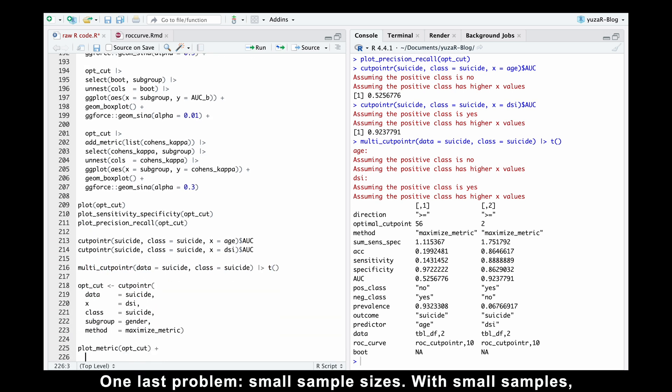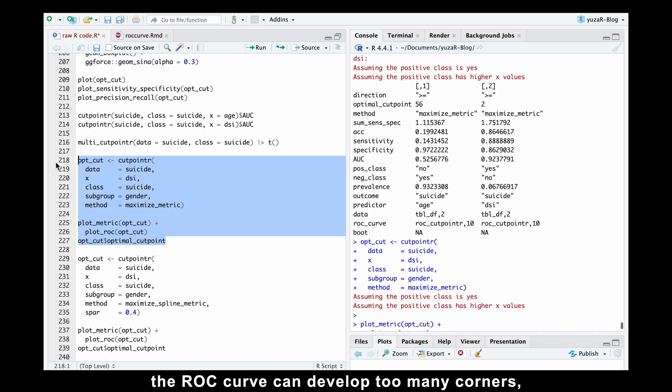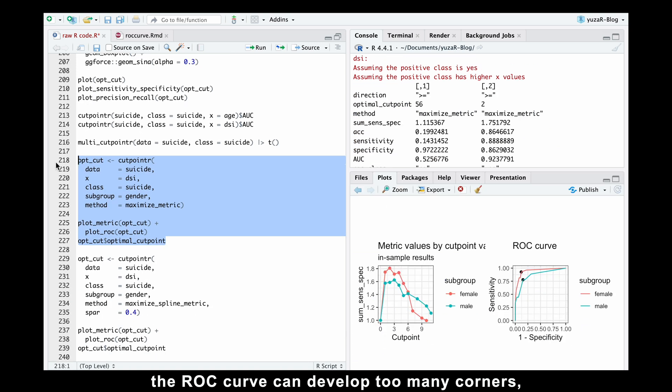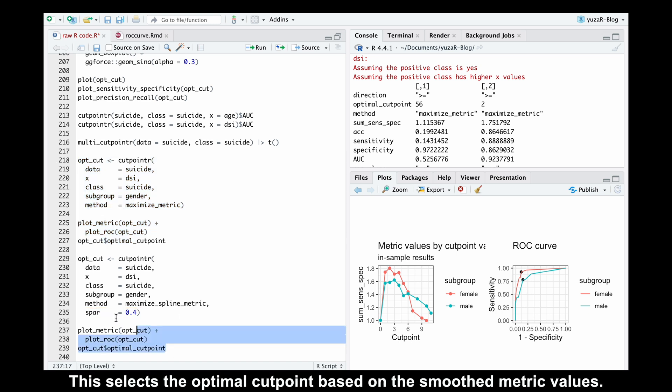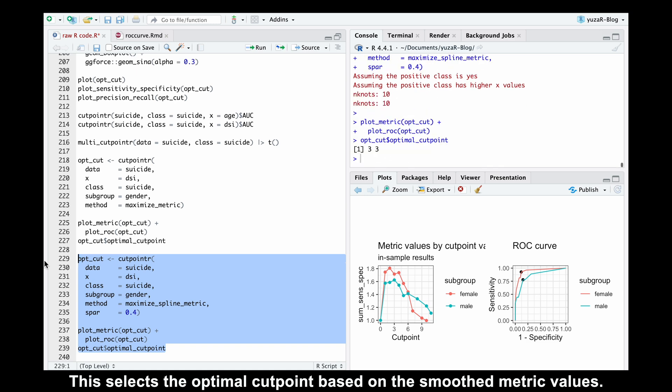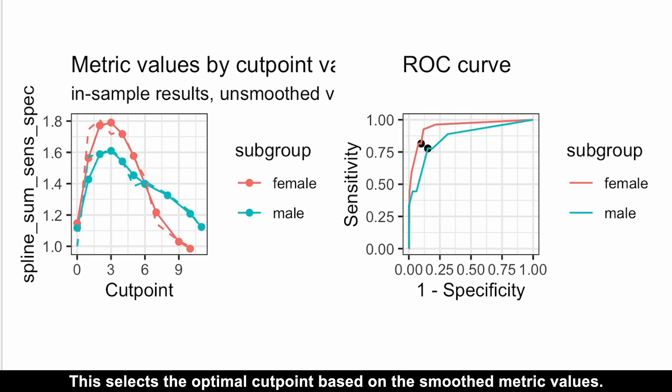One last problem: small sample sizes. With small samples, the ROC curve can develop too many corners, making it hard to pinpoint the best cutpoint. To fix this, you can apply a smoothing technique. One simple option is using maximize spline metric as the method and adjusting the spar argument smoothing parameter between 0 and 1. This selects the optimal cutpoint based on the smoothed metric values.